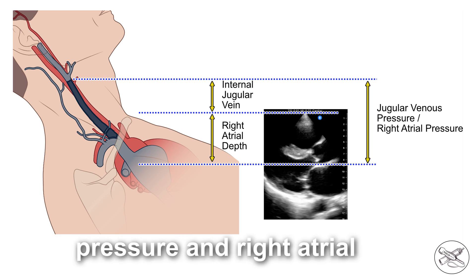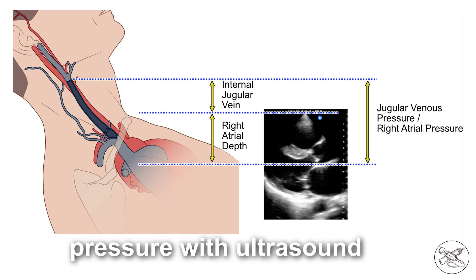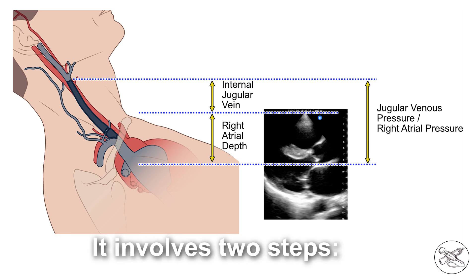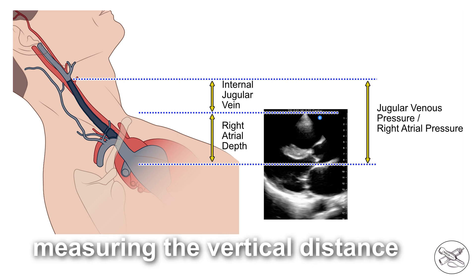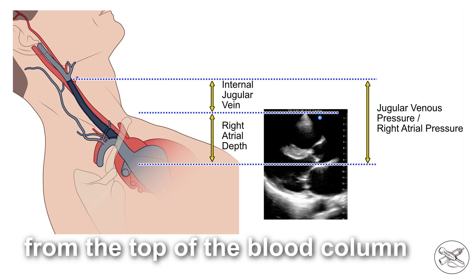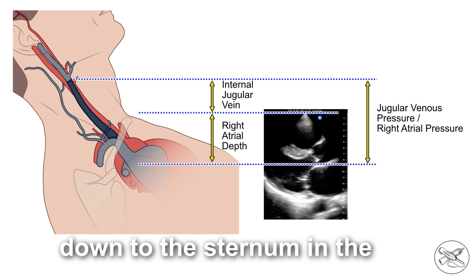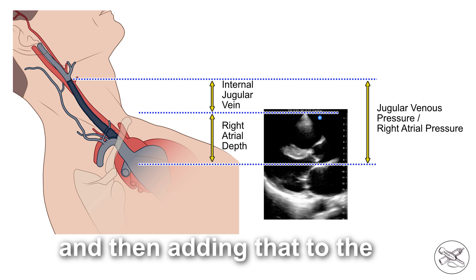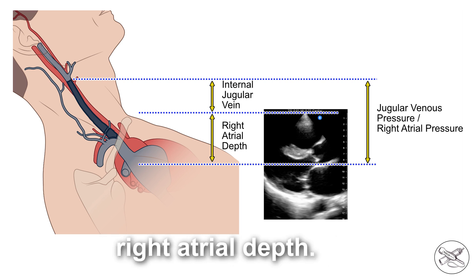Estimating the jugular venous pressure and right atrial pressure with ultrasound is quite simple. It involves two steps: measuring the vertical distance from the top of the blood column down to the sternum in the internal jugular vein, and then adding that to the right atrial depth.